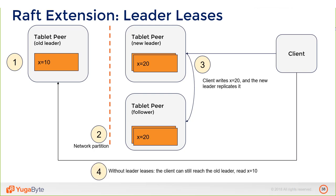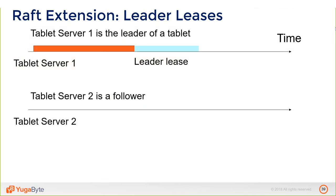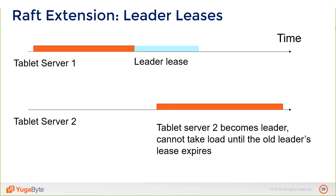Eventual consistency leads to bad outcomes: you change your password but can still log in with the old one, you change your name and it doesn't show up, you write a post and it disappears. YugaByte solves this with leader leases: a leader is granted the role for a certain period of time in the future. If it can renew the lease, it stays the leader. If not, it must step down. The new leader won't take writes until the old leader's lease has expired. This window is in milliseconds or a few seconds — not application-visible — but essential for consistency.